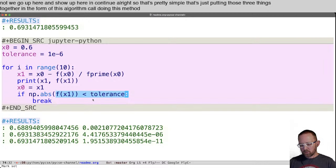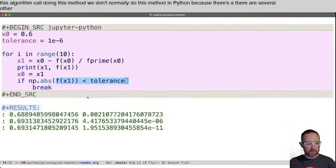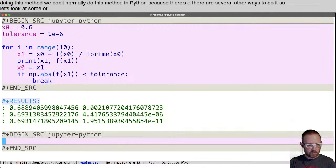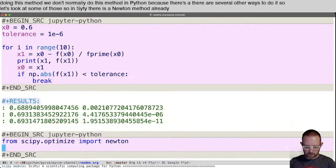Now we don't normally do this method in Python because there's this, there are several other ways to do it. So let's look at some of those. So in scipy, there is a Newton method already. Let's check it out.